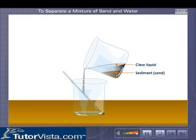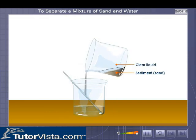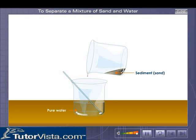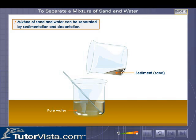The clear liquid above the sediment is gently poured off into another beaker without disturbing the sediment. This process of transferring the clear liquid without disturbing the sediments is known as decantation.